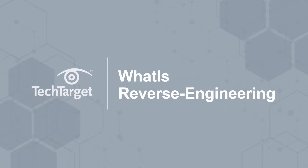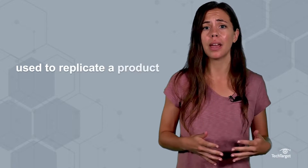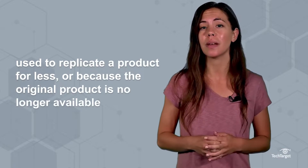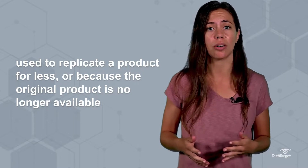Think of engineering, but put in reverse. Reverse engineering is the process of taking apart an object to see how it works. Software, physical machines, military technology, and even biological functions related to how genes work are all able to be reverse engineered. Reverse engineering software requires many important tools. It is primarily used to replicate a product more inexpensively or because the original product is no longer available. It can also help improve your software quality.